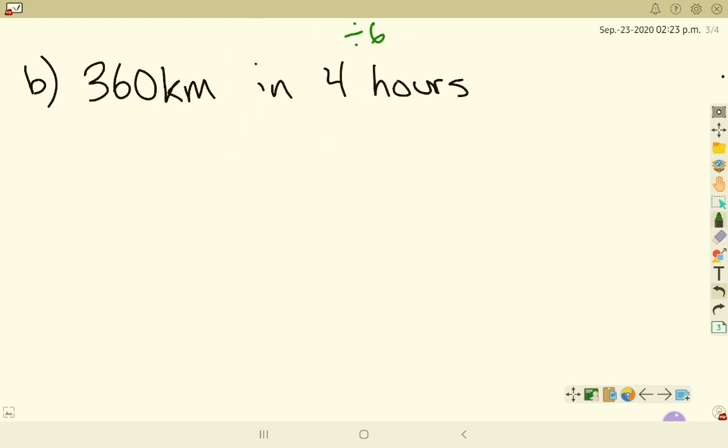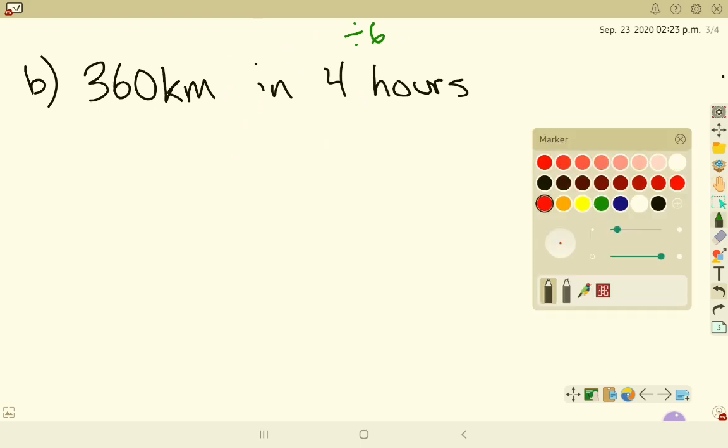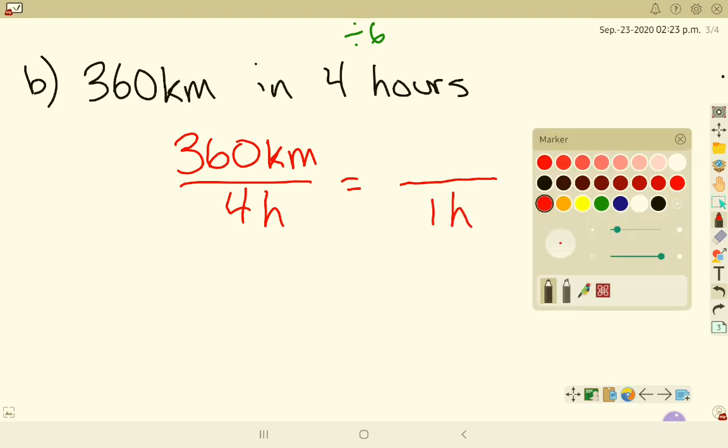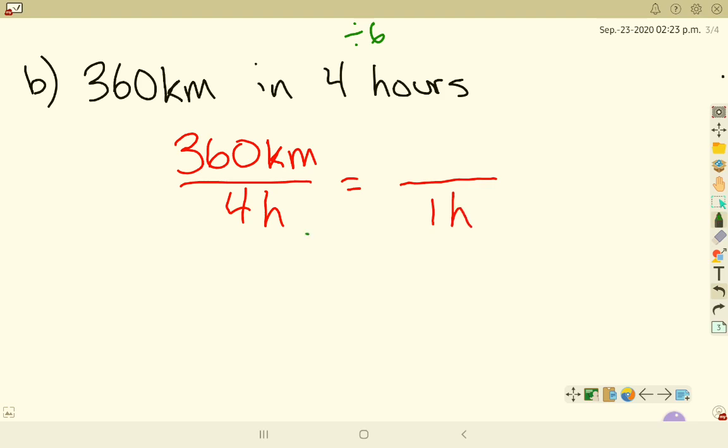Next one, I have 360 kilometers in 4 hours. So as a rate, that is 360 kilometers per 4 hours. If I want to change that into a unit rate, it needs to be per 1 hour. How do I change 4 into 1? I simply divide by 4 and I do the same thing in my numerator. Divide by 4 to get 90 kilometers per hour.